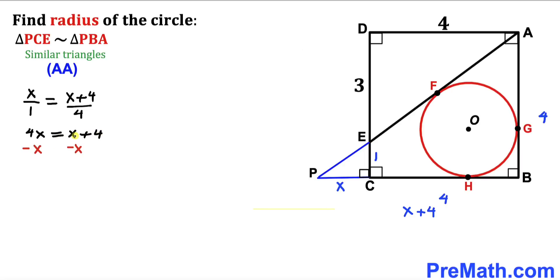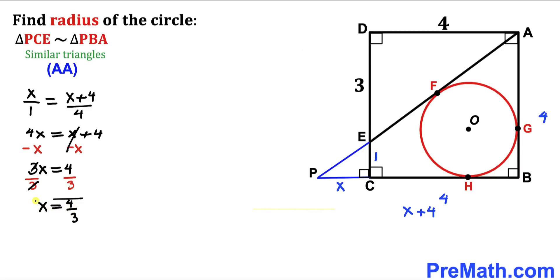Subtracting X from both sides gives 3X equals 4. Dividing both sides by 3, our X value turns out to be 4 divided by 3.